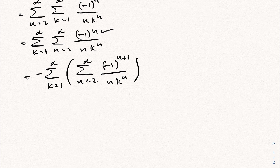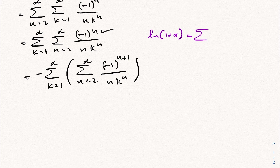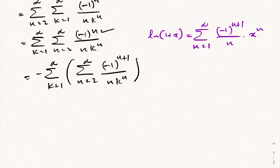Now we use the Taylor series representation of the natural log of 1 plus x. We know that the natural log of 1 plus x equals the sum from n equals 1 to infinity of minus 1 to the n plus 1, over n, times x to the n, for the absolute value of x less than or equal to 1.